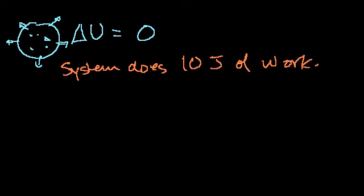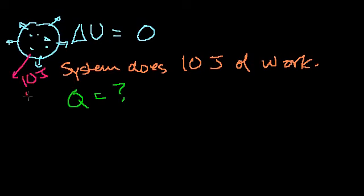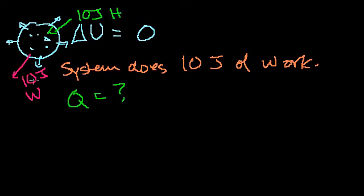My question is: how much heat was added or taken away from the system? The internal energy hasn't changed. The system did 10 joules of work — that's energy going out of the system. If the internal energy did not change, then 10 joules of energy had to go into the system. If it didn't, the internal energy would have gone down by the amount of work done. The only way we're adding energy outside of work is through heat, so 10 joules of heat must have been added.